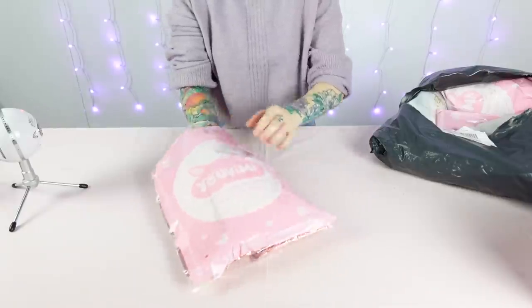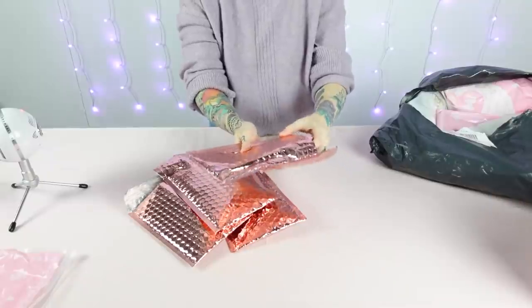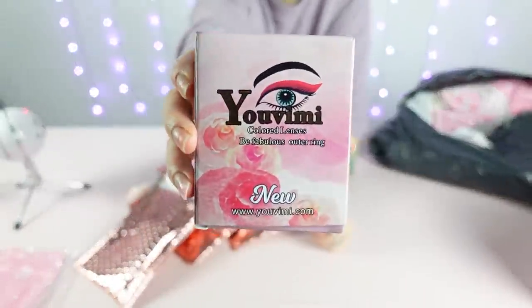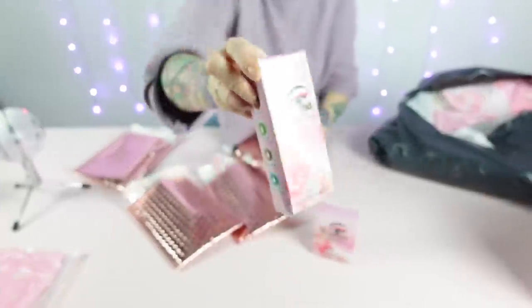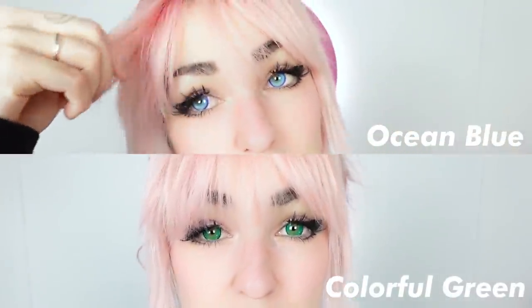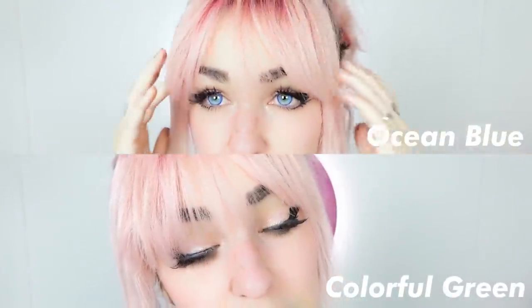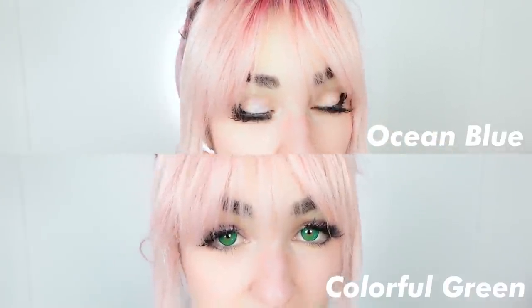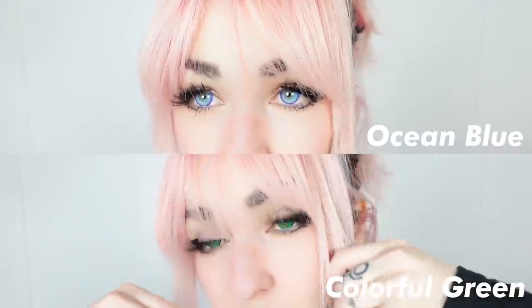Okay in this next bag there's a lot of small stuff. Ah those seem to be the two pairs of contact lenses that I chose. I got two pairs in total, one in the color ocean blue and one in colorful green. Both of these lenses are absolutely beautiful. Sometimes I have trouble finding nice colored contacts because I have green eyes and usually they look better on darker eyes but these look so nice.